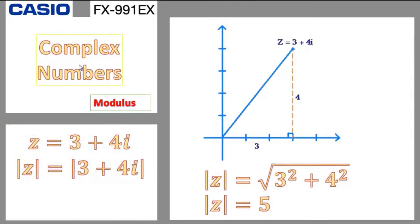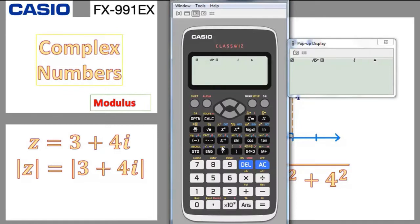Sometimes the complex number is written as Z equals 3 plus 4i and we want to find the modulus. The modulus requires taking the radical of the sum of squares of the real and imaginary parts — 3 squared is 9, 4 squared is 16, 9 plus 16 equals 25, radical 25 equals 5. On the calculator, go to Shift absolute value (abs), write the complex number 3 plus 4i, press equal — it gives you 5 straight away.